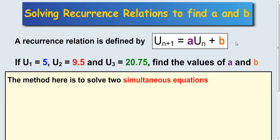In this lesson we're going to look at a different type of recurrence relation question. The recurrence relation is defined by u of n plus 1 equals a u of n plus b.